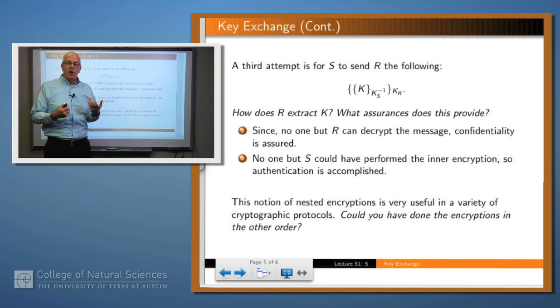First of all, we know that no one else could decrypt the message who might have intercepted it along the way because it's encrypted with the receiver's public key. And nobody but the owner of the receiver's private key could strip off that level of encryption. Once you've done that, then you know that the inner message, which is encrypted with the sender's private key, must have come from the sender because nobody else could have produced that. So we've accomplished both confidentiality and authentication in one message at the cost of doing these two levels of encryption.